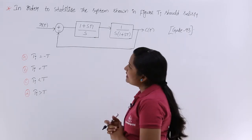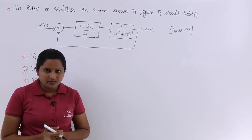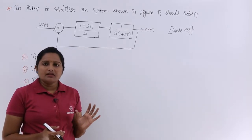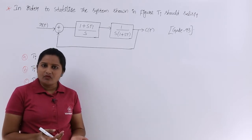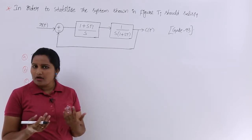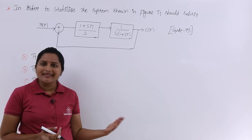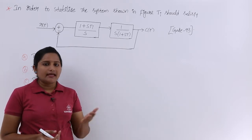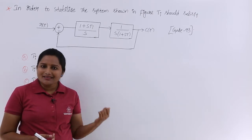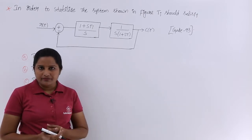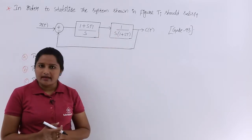A block diagram of the system is given. To perform stability analysis we require the Routh array. To get the Routh array we need the characteristic equation, and to get the characteristic equation we need to evaluate this block diagram first.